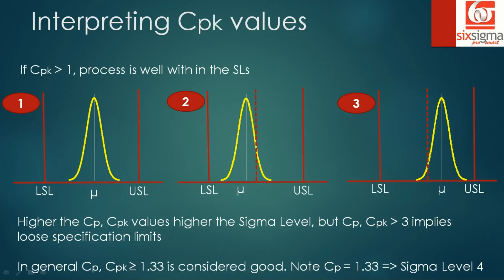As a rule of thumb, higher CP or CPK values correspond to higher sigma levels. However, CP or CPK greater than three implies there are loose specification limits — meaning the specifications may need to be revisited. In general, CP or CPK greater than 1.33 is considered good. Note that CP equal to 1.33 corresponds to a sigma level of four, because (USL minus LSL) equals eight sigma divided by six sigma, giving four-thirds, or 1.33.